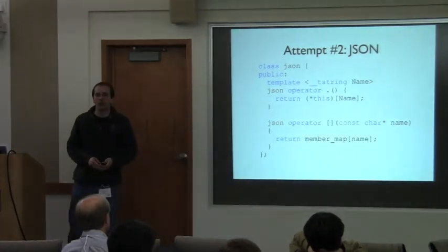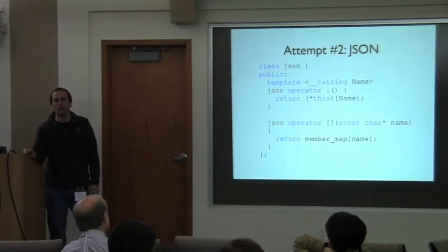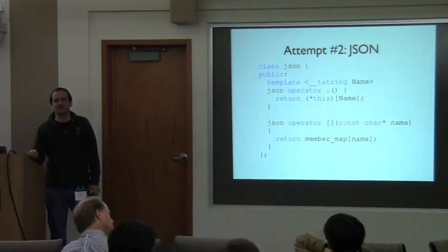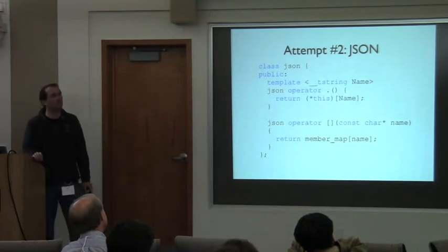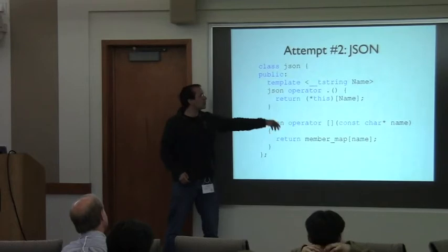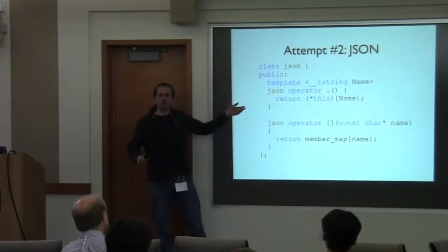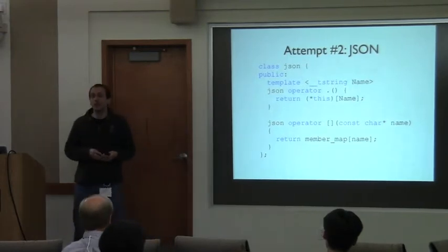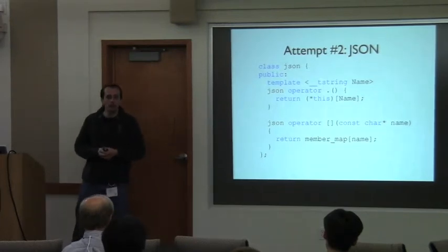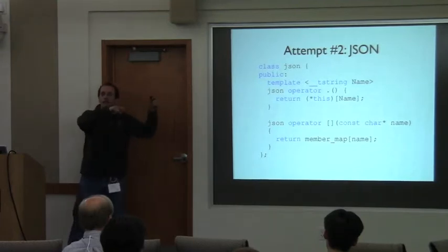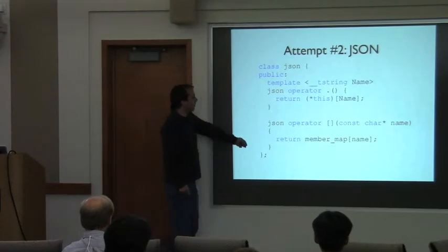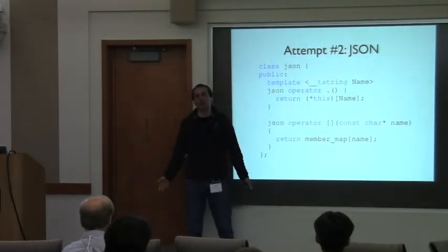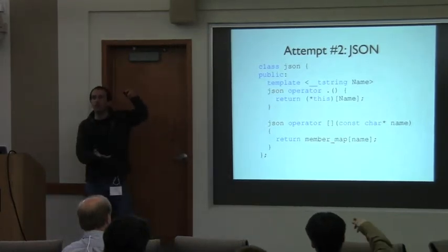A question was raised: now whatever you put after the dot will just be passed as a string and not produce a compile error like 'I couldn't find this member.' I have a few slides about that. Sometimes you get an error further in if you try to access it as a member somewhere else. If it's converted to a runtime string and looked up in JSON, you'll get a lookup failure at runtime — because you don't know until runtime which members the JSON block you loaded actually has.